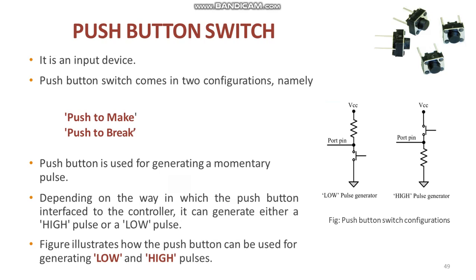The next component is a push button switch. A push button is a simple type of switch that controls an action in a machine. The push button switch comes in two configurations: push to make and push to break. In the push to make configuration, the switch is normally in the open state and it makes a circuit contact when it is pushed or pressed. In the push to break configuration, the switch is normally in the closed state and it breaks the circuit contact when it is pushed or pressed. The push button stays in the closed or open state as long as it is kept in the pushed state, and it breaks or makes a circuit connection when it is released.